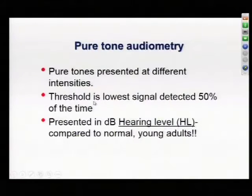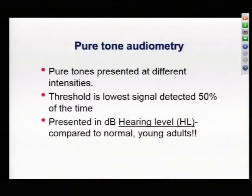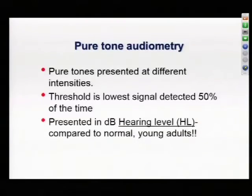The threshold is determined by where the patient can just detect the sound 50% of the time. It's calibrated to what normal young adults hear, so everyone's hearing level is presented according to a normalized population. Our hearing is not flat — we hear certain sounds better than others — but it looks flat on the hearing test because it's normalized. A whisper would be about 20 decibels; anywhere between 0 and 20 is considered normal hearing. Most people speak at about 60 decibels. Remember, it's a logarithmic scale — 100 decibels is 10 orders of magnitude louder than 0 decibels.